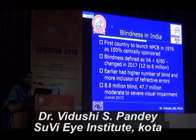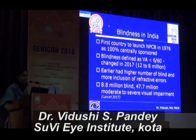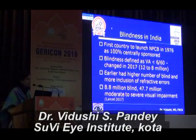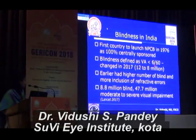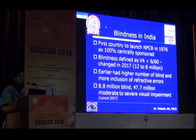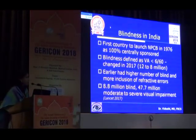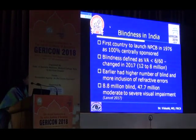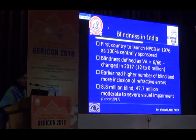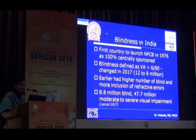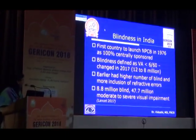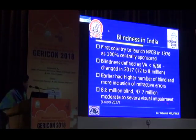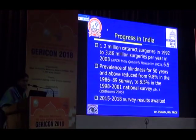India has done a lot of work in the field of blindness. India was the first country to launch the National Program for Control of Blindness in 1976, and blindness in India was defined as visual acuity of less than 6/60 — a definition more stringent than the WHO definition. This has now been changed in 2017, bringing the number of blind down from 12 million to 8.8 million by aligning with the WHO definition, according to data published in The Lancet in 2017.